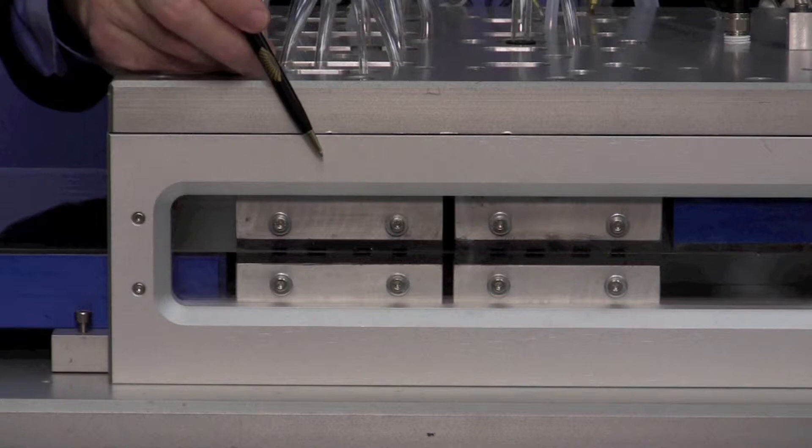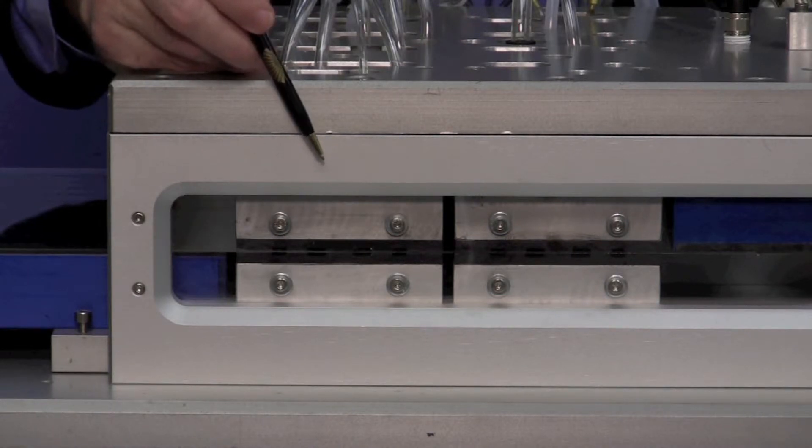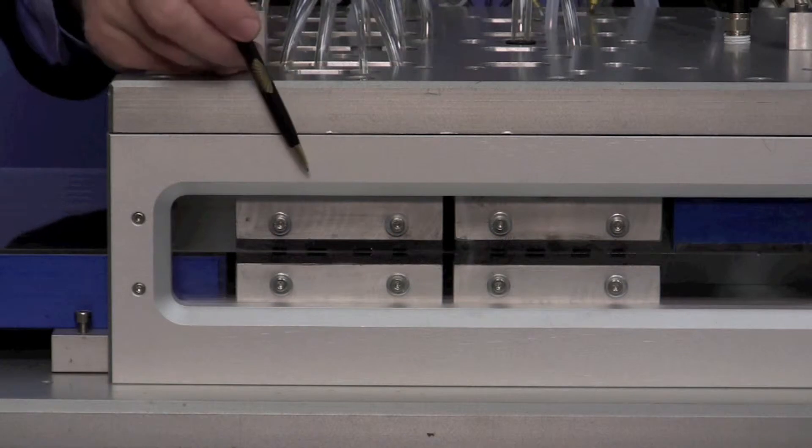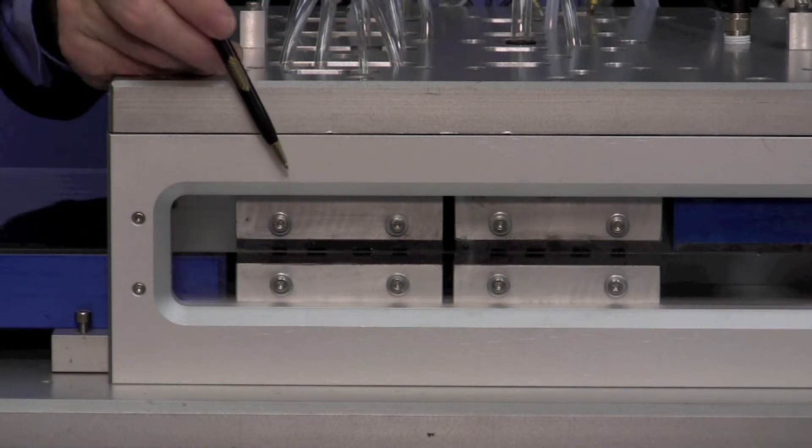So this high velocity, high pressure flow of cleaning agent has a very effective boundary layer scrubbing and cleaning effect on both surfaces of the glass at the same time, and then it's evacuated through the low pressure groove.